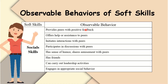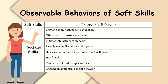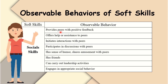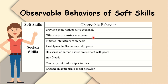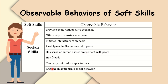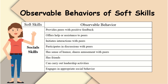In social skills, we can observe students' behavior. For example: provides peers with positive feedback; offers help or assistance to peers; initiates interactions with peers; participates in discussion with peers; has a sense of humor; shares amusement with peers; has friends; can carry out leadership activities; and engages in appropriate social behavior.